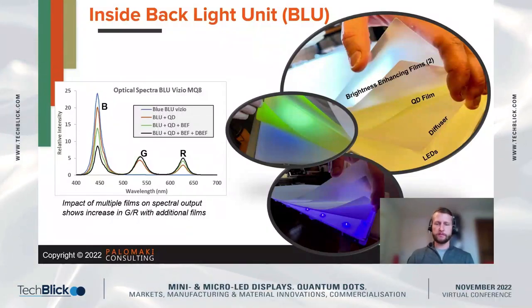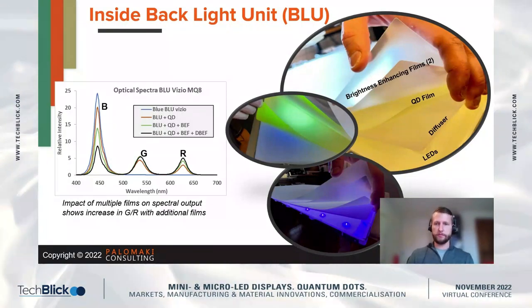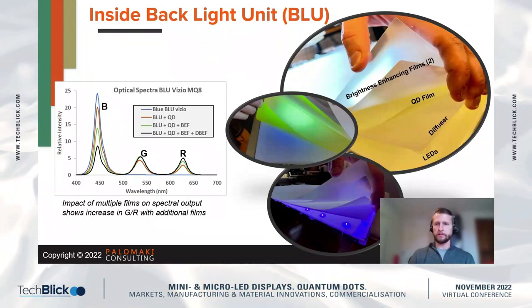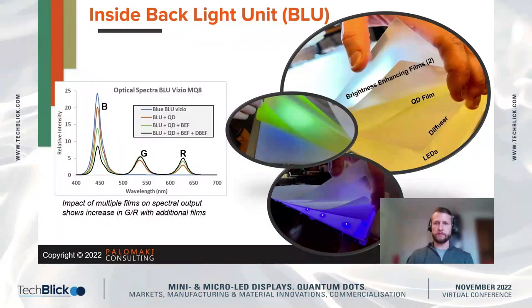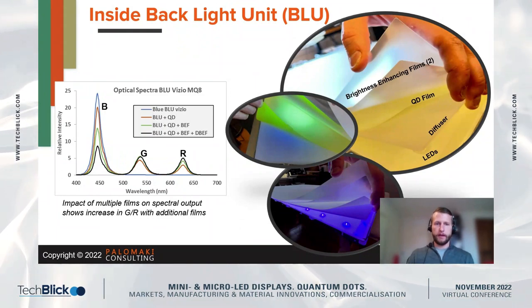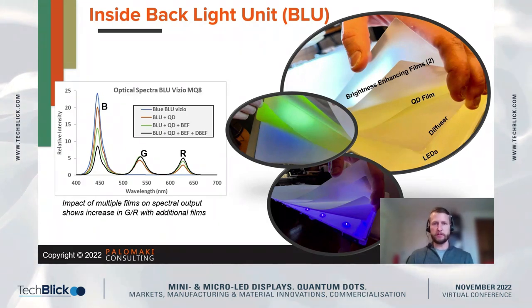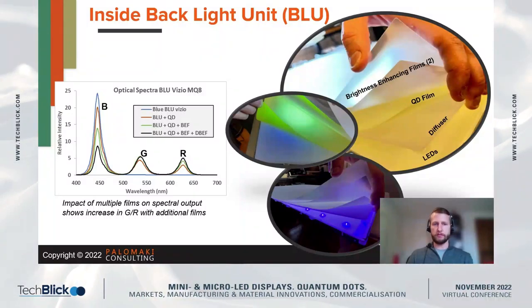As we take this TV apart, we can measure the optical spectrum. You can see pictures here of those various layers — LED diffuser, QD film, and brightness enhancing films. When we measure the spectrum as we remove films, we can learn something about how the light behaves in the back of this TV, starting with just the blue backlight unit.